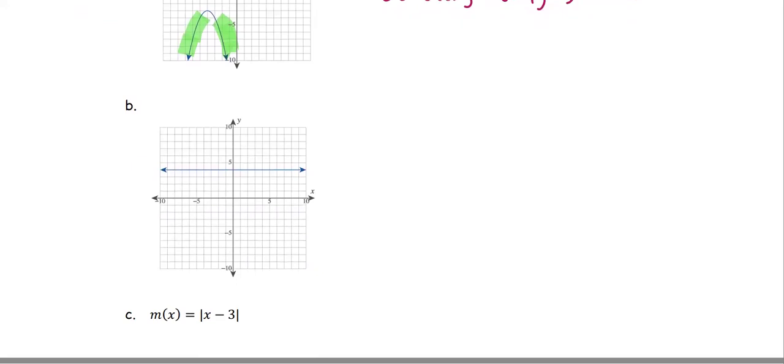For the graph in part b, for any x value, the y values are the same. In this case, no increasing, no decreasing, just a constant for the entire domain, which is from negative infinity to positive infinity.